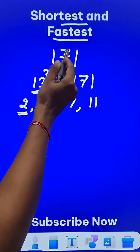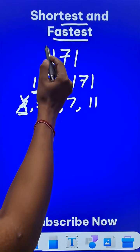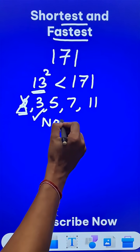Now does 2 divide 171? No. Does 3 divide 171? 1 plus 1, 2 plus 7, 9. Oh yes, that number 3 divides 171. So this is not prime.